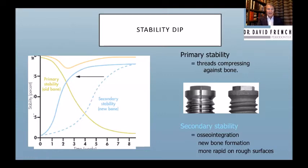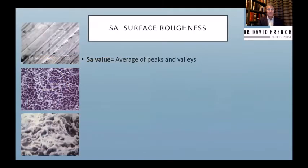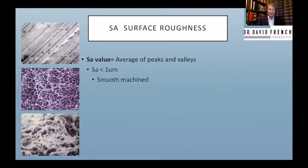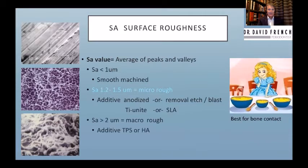How rough is rough? We have a machined implant with some roughness, modern design is what's called micro-rough, and the old hydroxyapatite spray-on was very rough. An Sa value of 1.2 to 1.5 is defined as micro-rough, and it turns out that's the Goldilocks spot for bonding and getting maximum bone-to-implant contact.